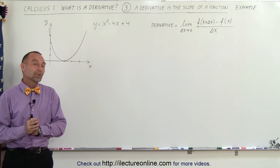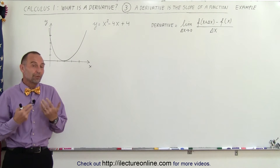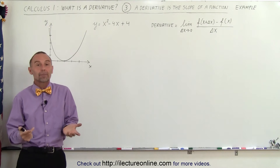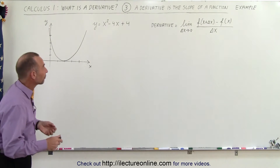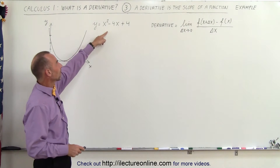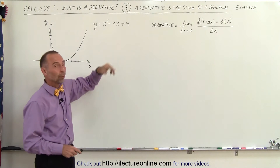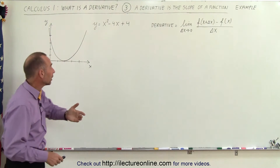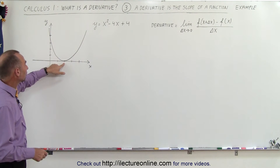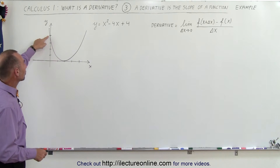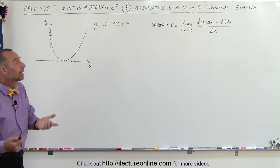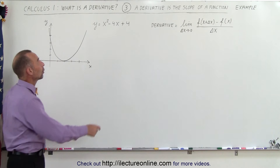Welcome to our lecture online. To get us some more familiarity with what a derivative is, let's do another example of another function. Here we have the function y equals x squared minus 4x plus 4. It is a parabola. It has a minimum value at x equals 2, and it crosses the y-axis at x equals 4. You can find that easily by plugging those values in.